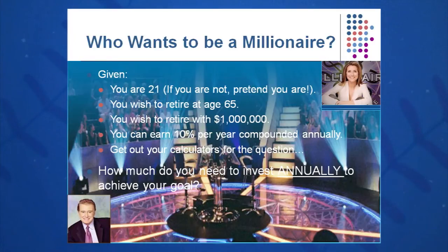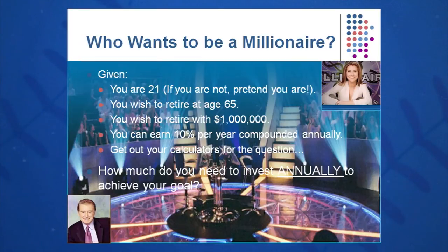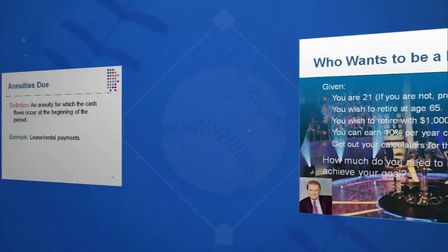If you want a $2,000,000 goal by the time you're 65, you need to double that amount each and every year to get there — something on the order of about $3,000 per year. Still very, very achievable if you put it in a portfolio that's earning you 10%.